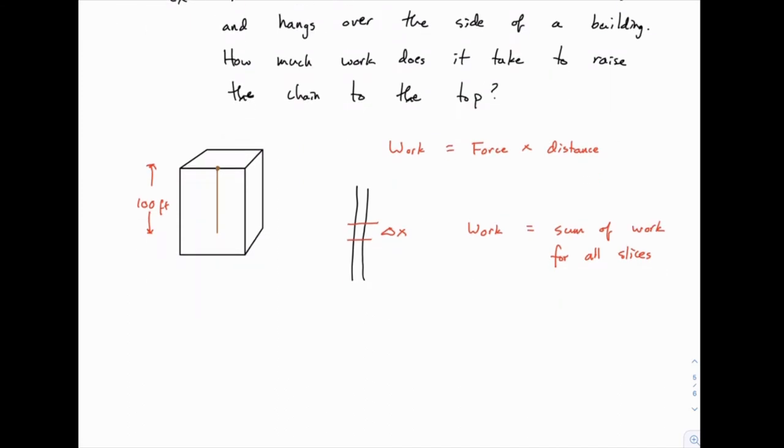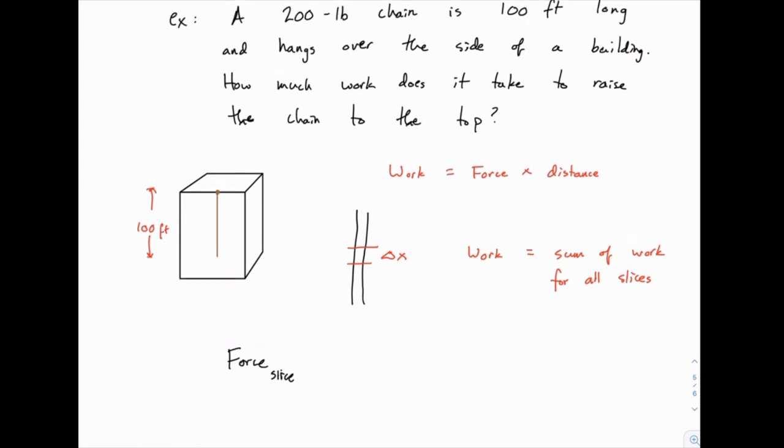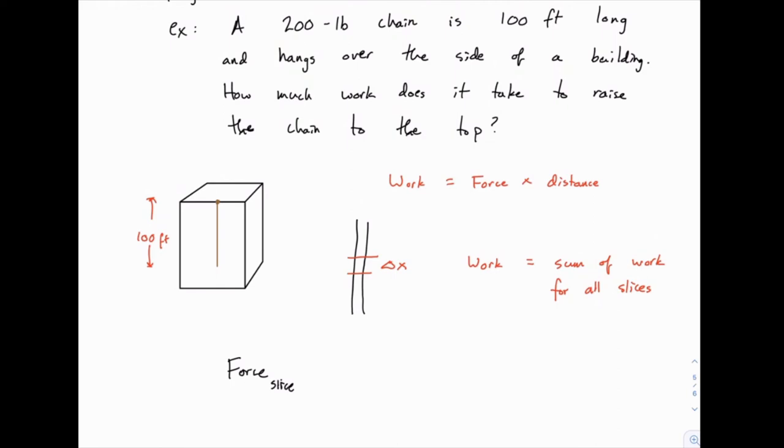First of all, let's think about the force on one slice. The force is the weight of that little piece. The weight might be tricky at first, but notice the information we're given. We're told that this chain is 200 pounds in total, and it's 100 feet long. From that we can figure out the unit weight.